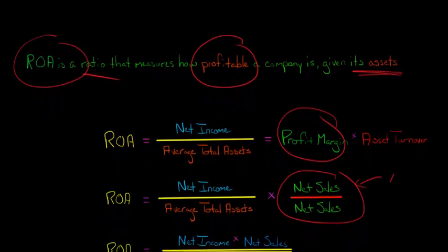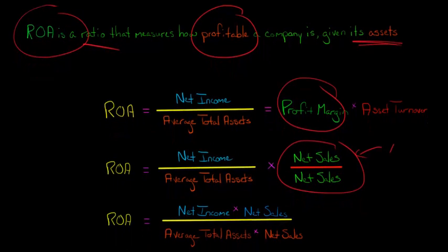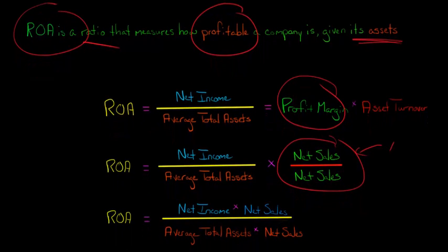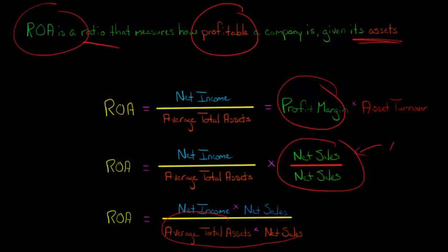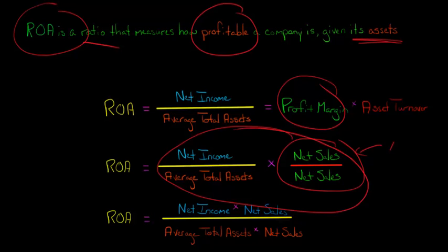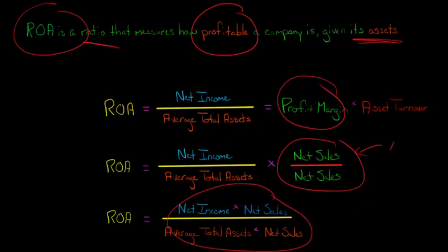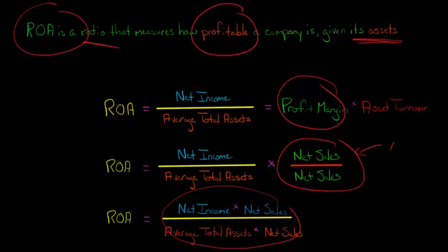We're just going to rearrange some things and see what happens. We take net sales and put it in the numerator — so we have net income times net sales on top, and average total assets times net sales in the denominator. This is equivalent; we're just combining it all into one fraction.